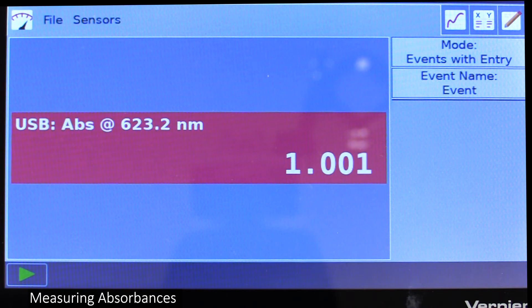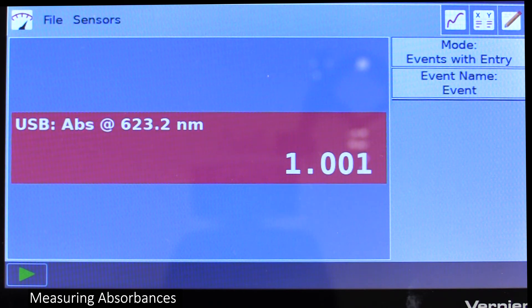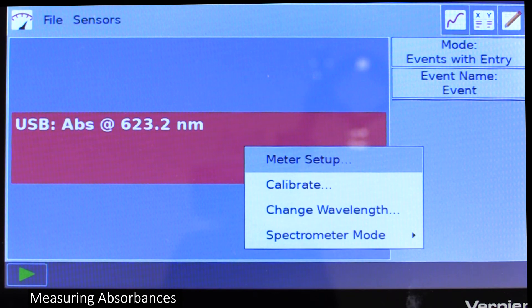The red box on the meter screen should now display both the absorbance of the solution and the wavelength you're taking this measurement at. If you need to, you can manually change the wavelength by poking the box and selecting change wavelength.